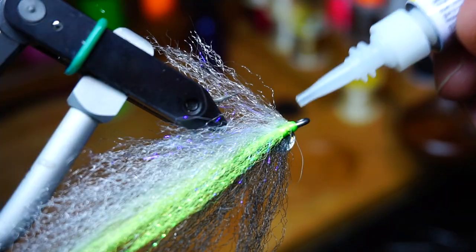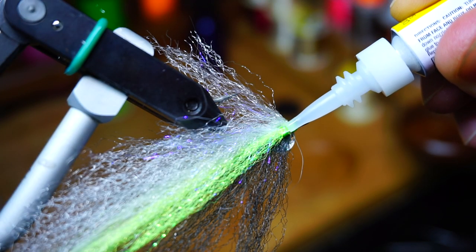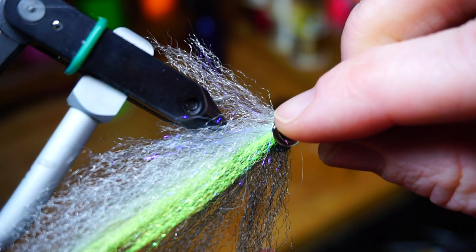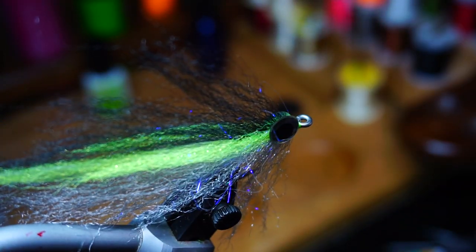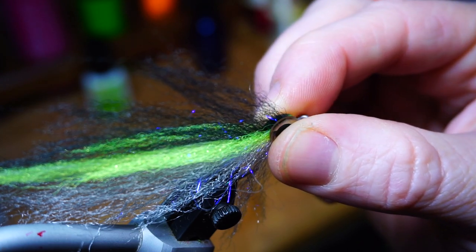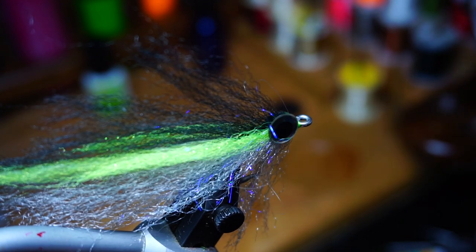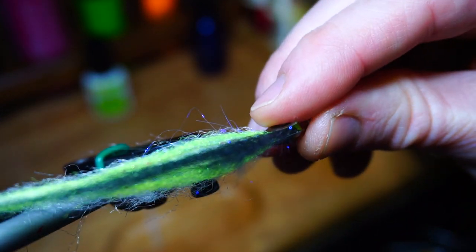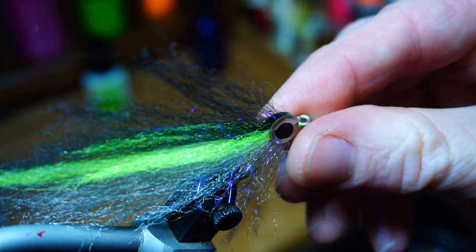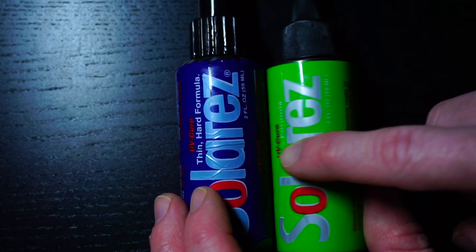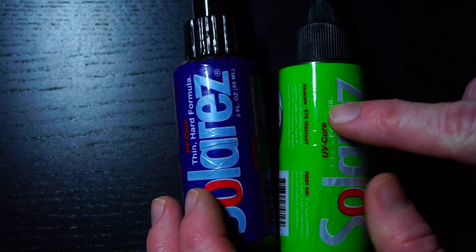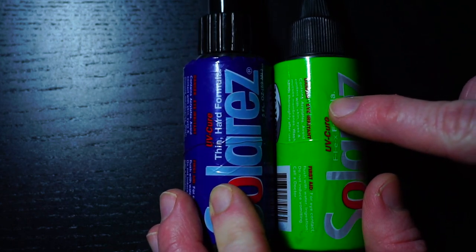Now do the same thing with the other eye on the other side and make sure you align these eyes perfectly. You want them aligned while you're looking straight on at them, also on the front, and also above. Keep playing with the eyes until they're perfectly aligned and then let them dry before epoxying them. Gel super glue does take a little longer than regular super glue to set, so it gives you some time to play with it.